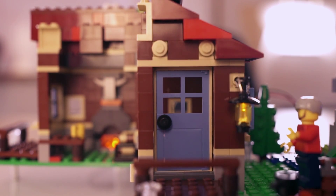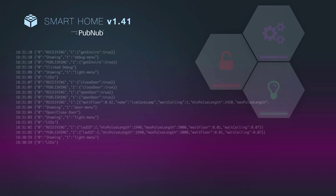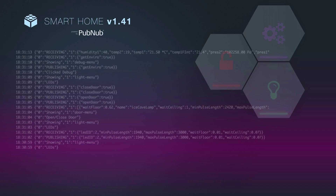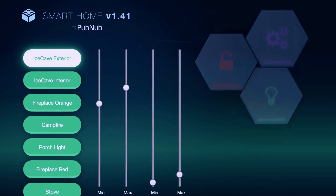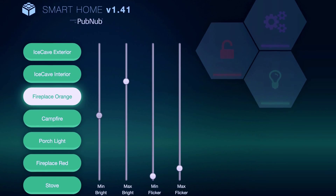We're gluing all this together using PubNub. We're able to publish messages into the house to ask it for on-demand readings of various environmental values, such as barometric pressure and temperature. You can also command the house to turn the lights off or open the door.